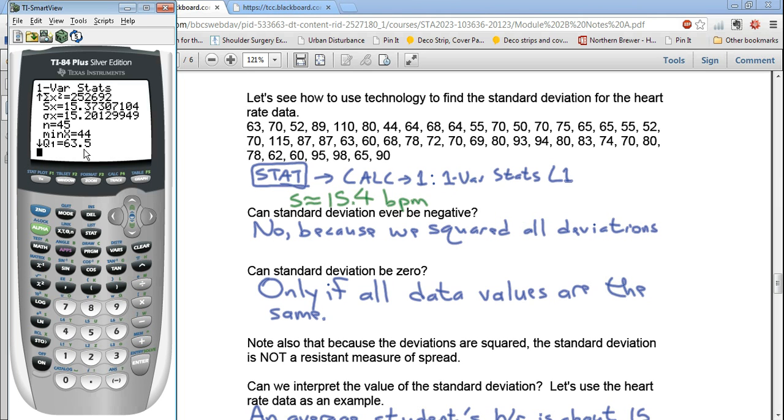And then Q1, the first quartile, was 63.5. That means about 25% of the class had heart rates below 63.5, and 75%, 3 quarters, had heart rates above that. The median is 70 beats per minute, and that means half of the students have that heart rate or lower, and half have that heart rate or higher.